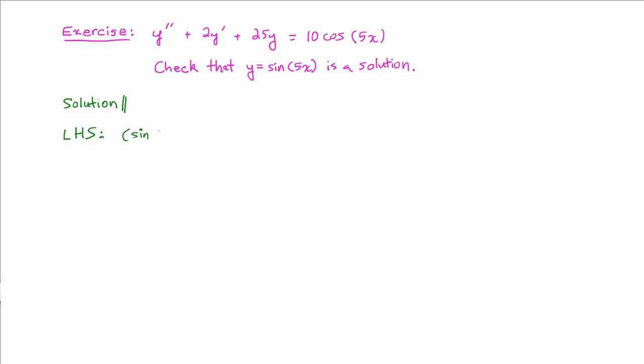When we do that, we get sine of 5x double prime plus 2 sine of 5x prime plus 25 sine of 5x. Now we need to know what the first and second derivatives are, so let's calculate those separately.